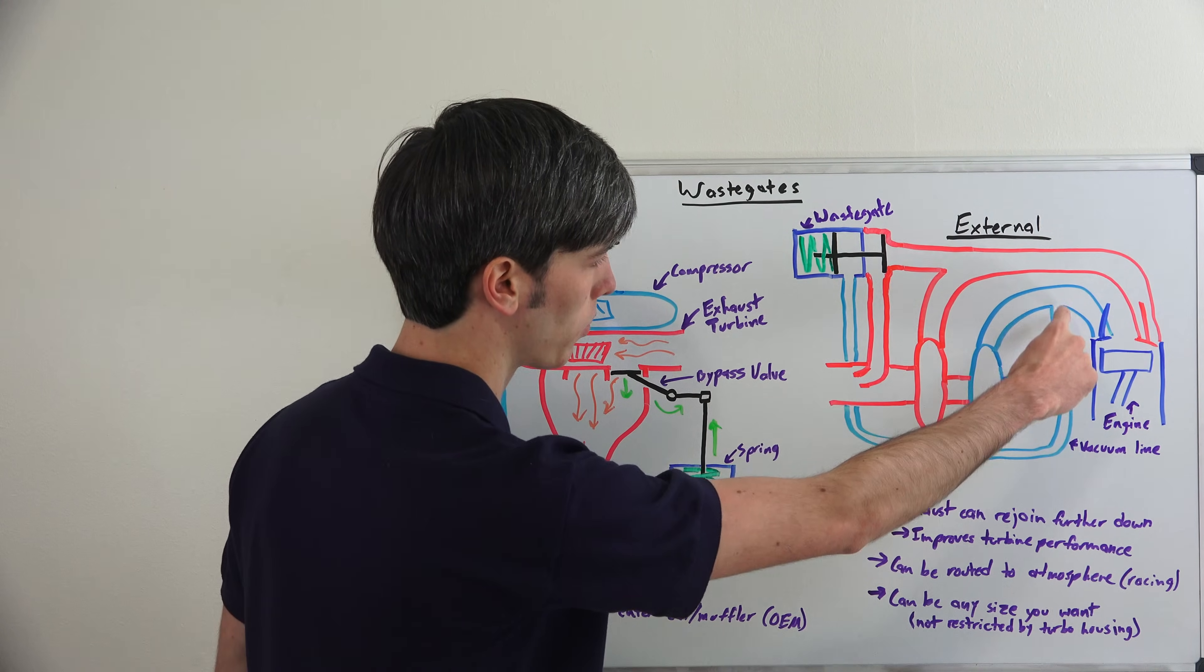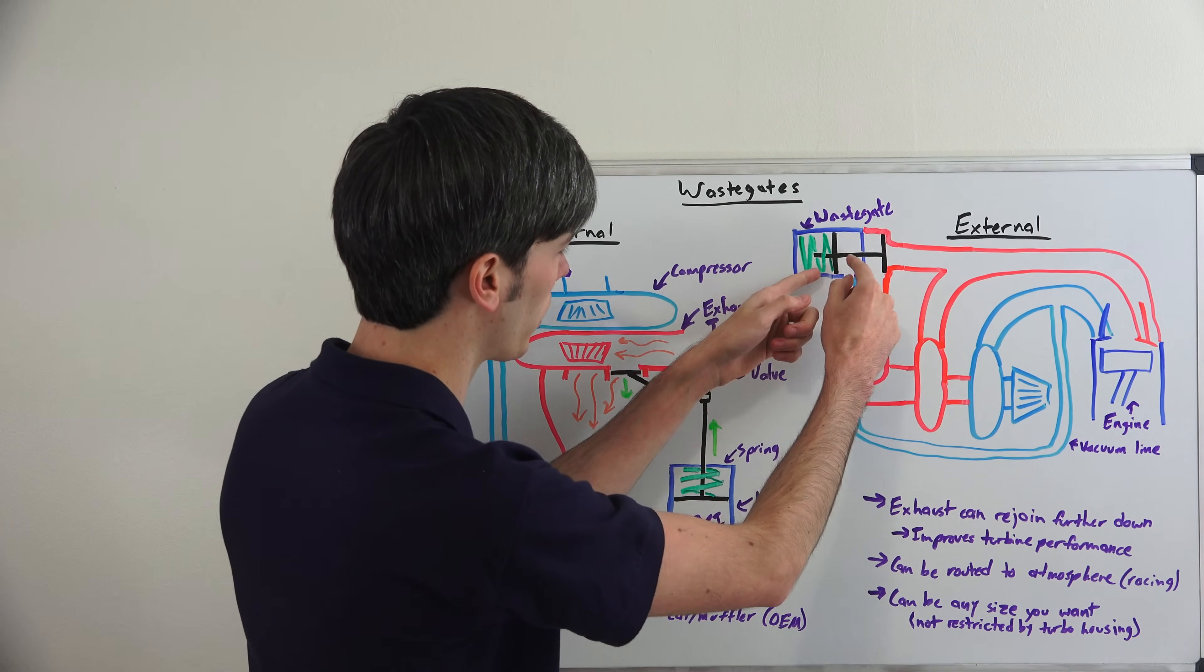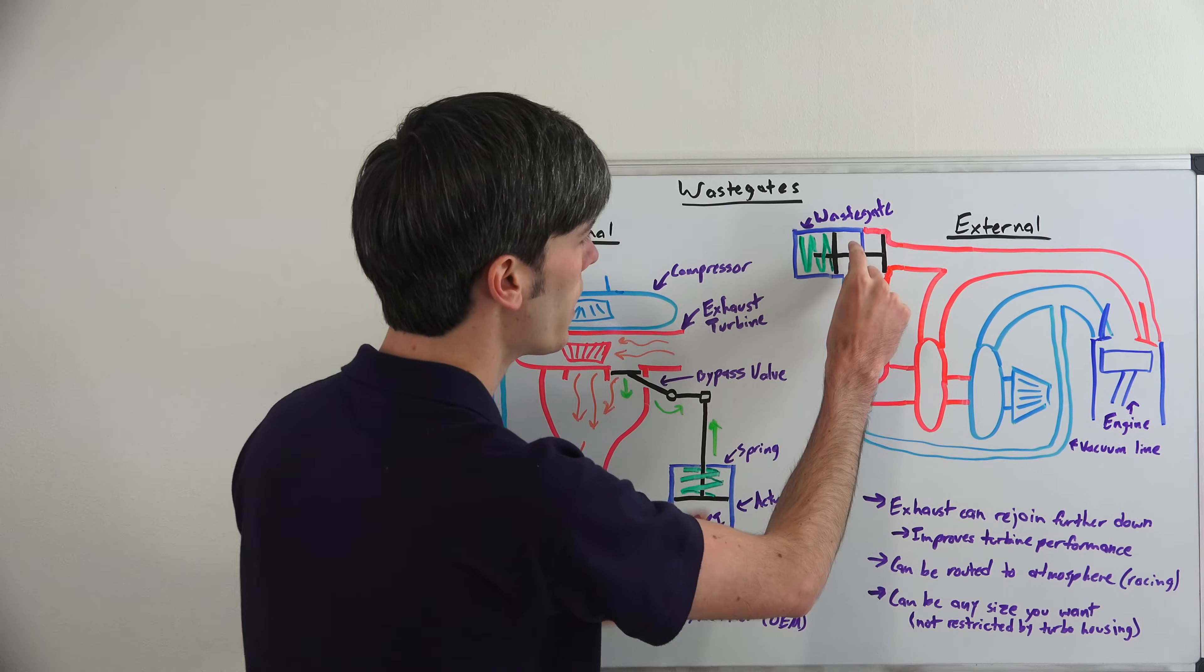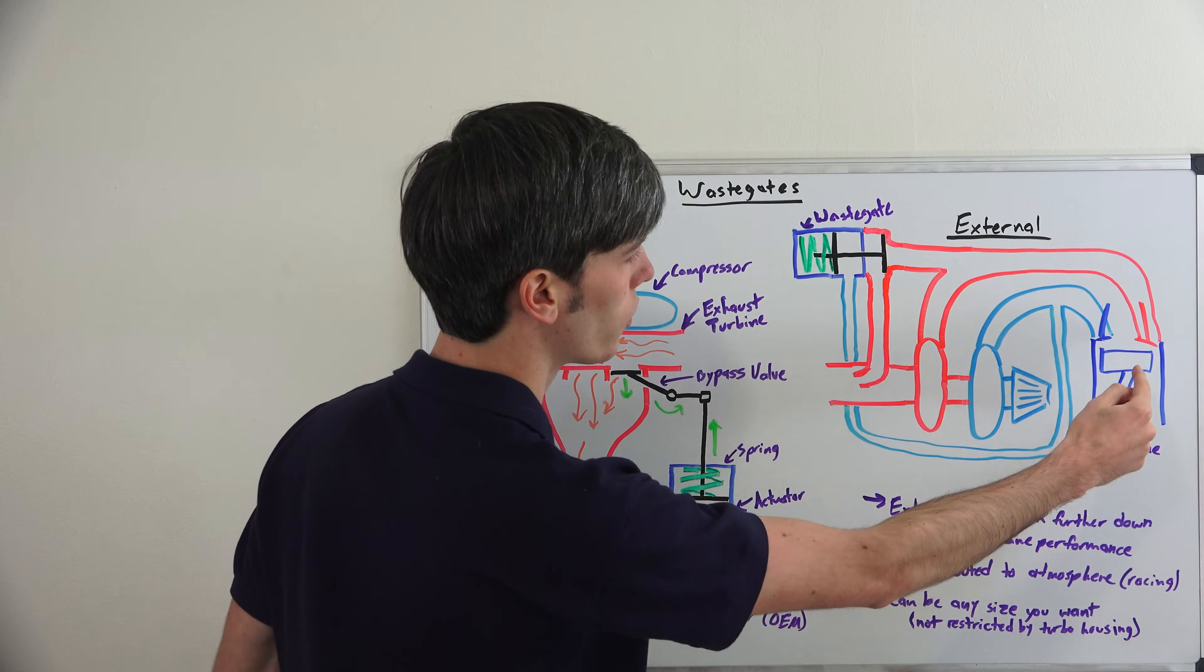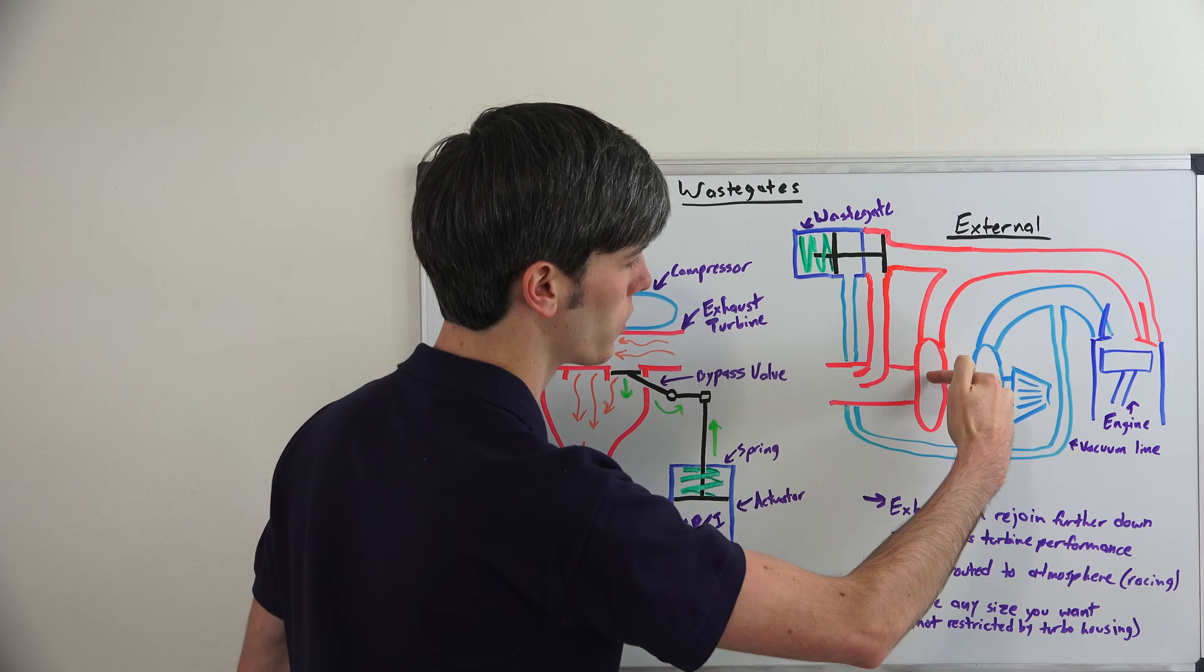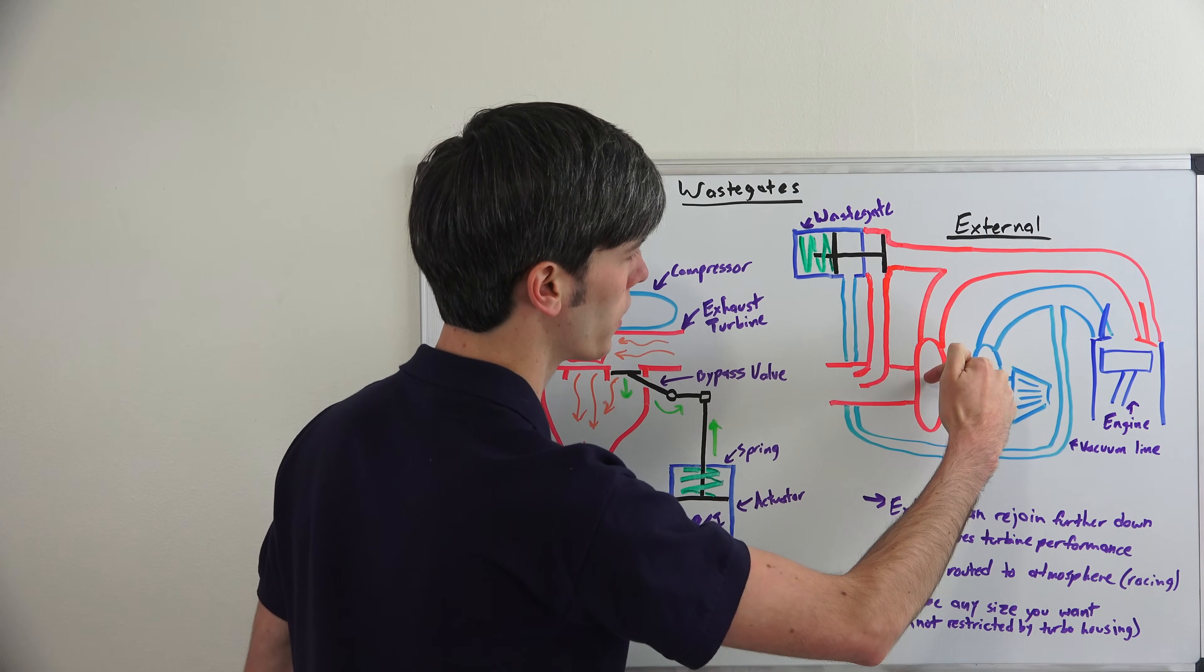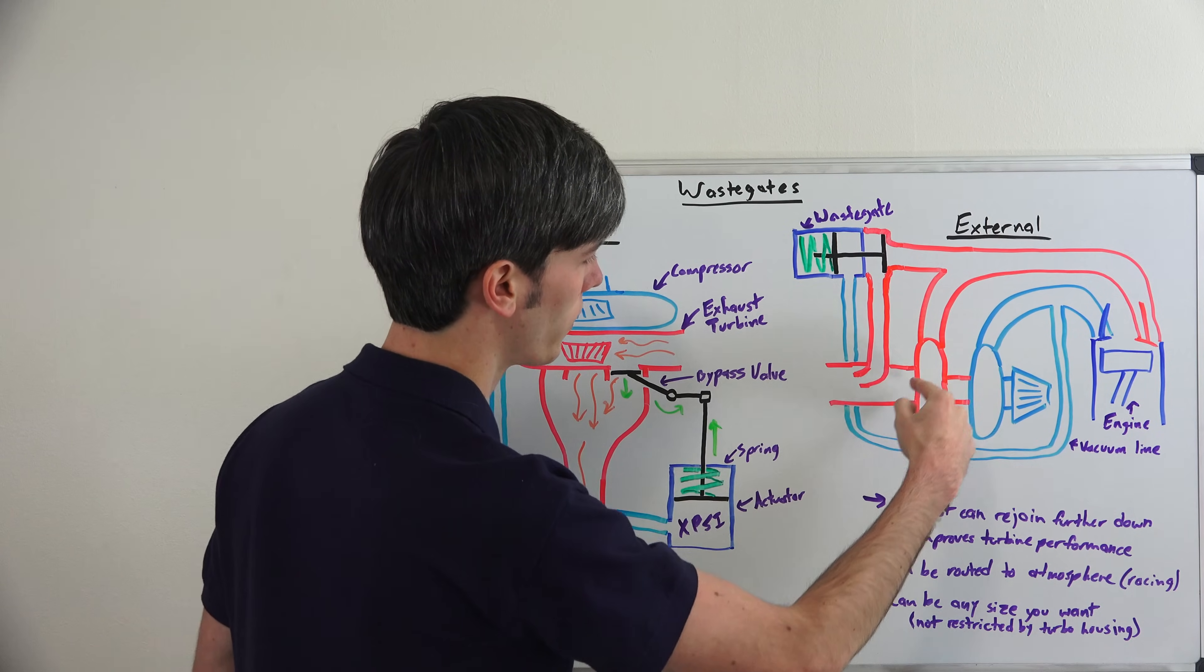And so that pressure then travels through, travels into our pneumatic wastegate which we have here, the pneumatic actuator. And so that presses in the spring, that spring opens up this valve. And so the exhaust gas is coming out of the engine, instead of forcing them to travel through the turbocharger, the exhaust portion in the turbine, they can travel directly through this valve here and bypass that turbocharger.